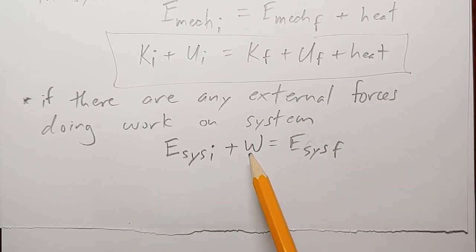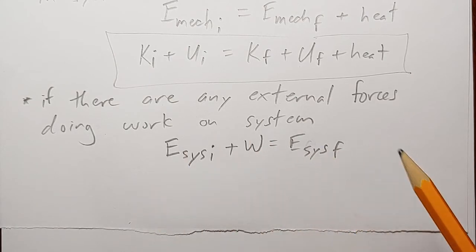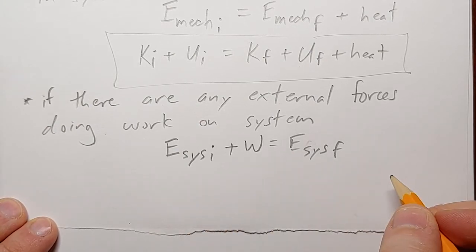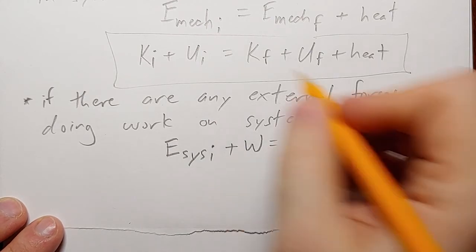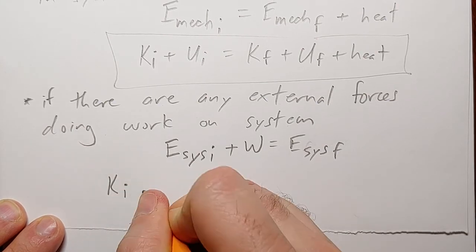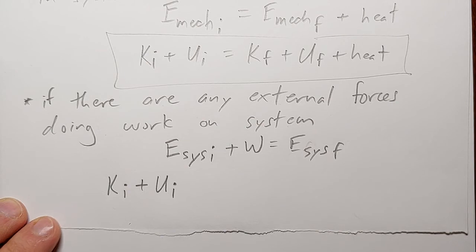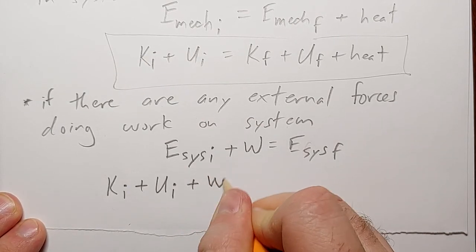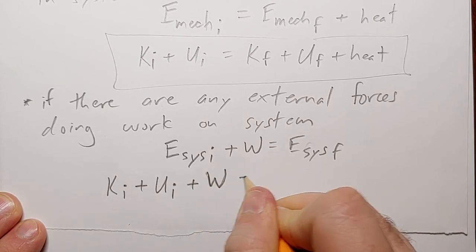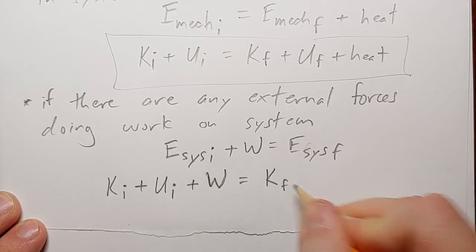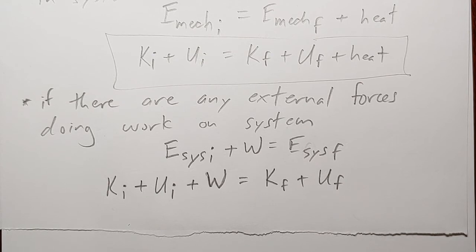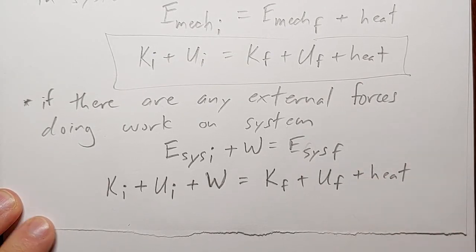This shouldn't be surprising, because if we rearrange this equation, we get: work equals the final minus the initial energy of the system, or work equals change in energy — which was our fundamental definition of work. So in that case, if the initial energy of the system is mechanical energy, we would have your initial kinetic and initial potential energies, plus any work done, which tells you the total energy at the end — a combination of potentially some kinetic and potential energy at the end, plus any heat generated.